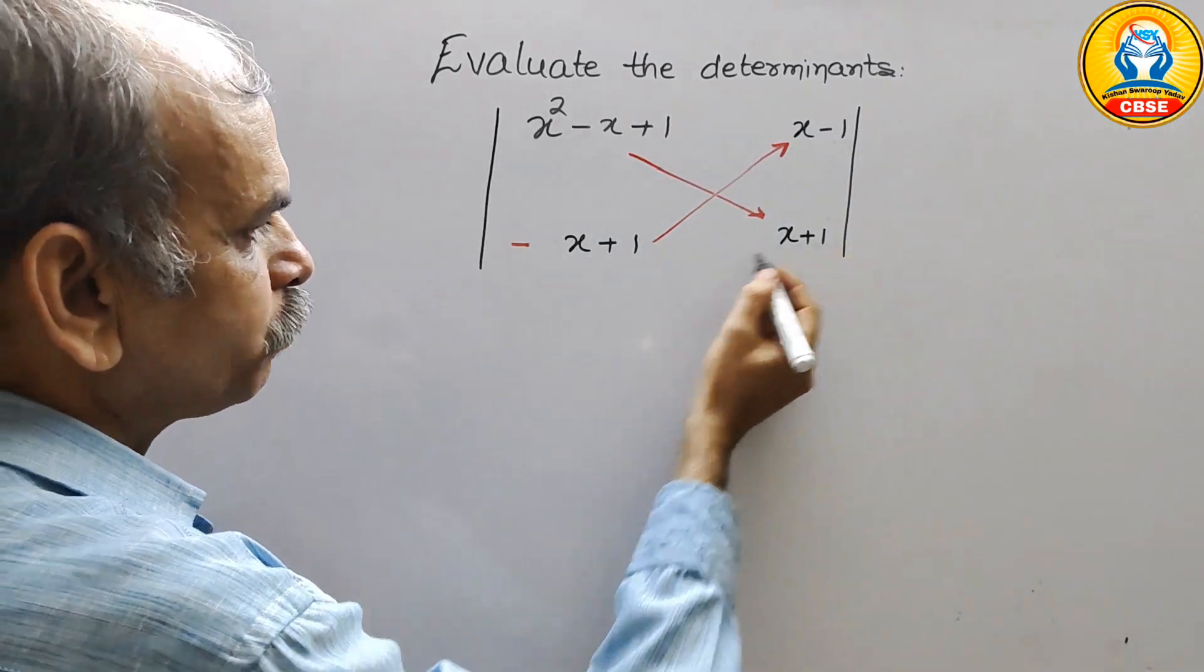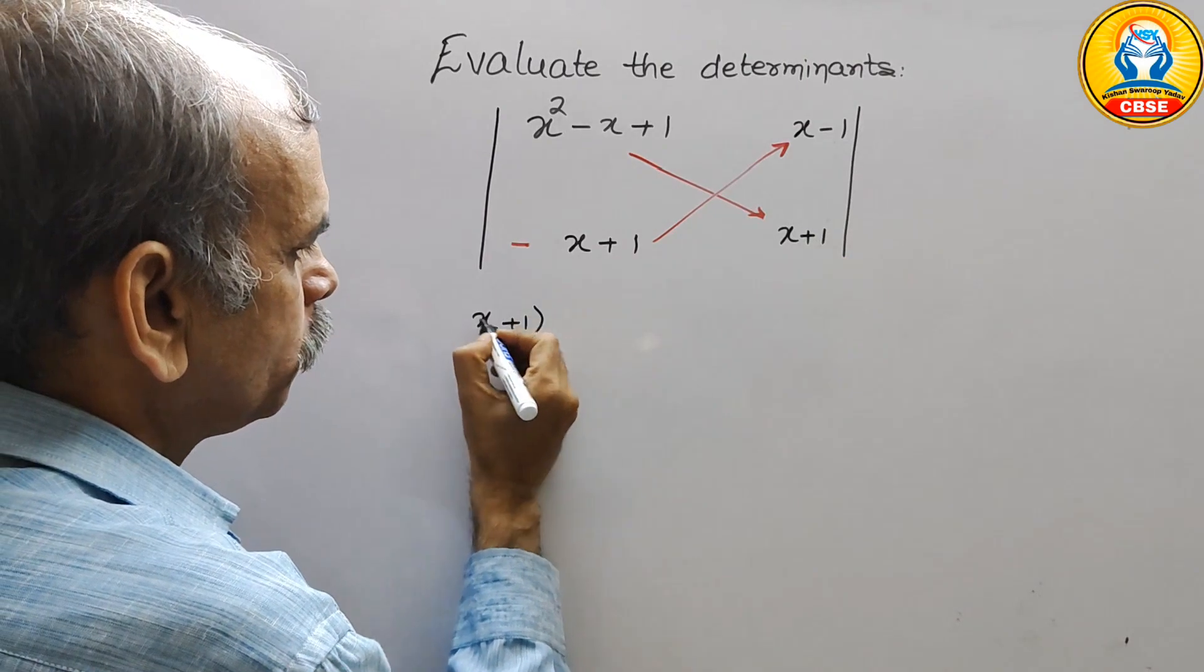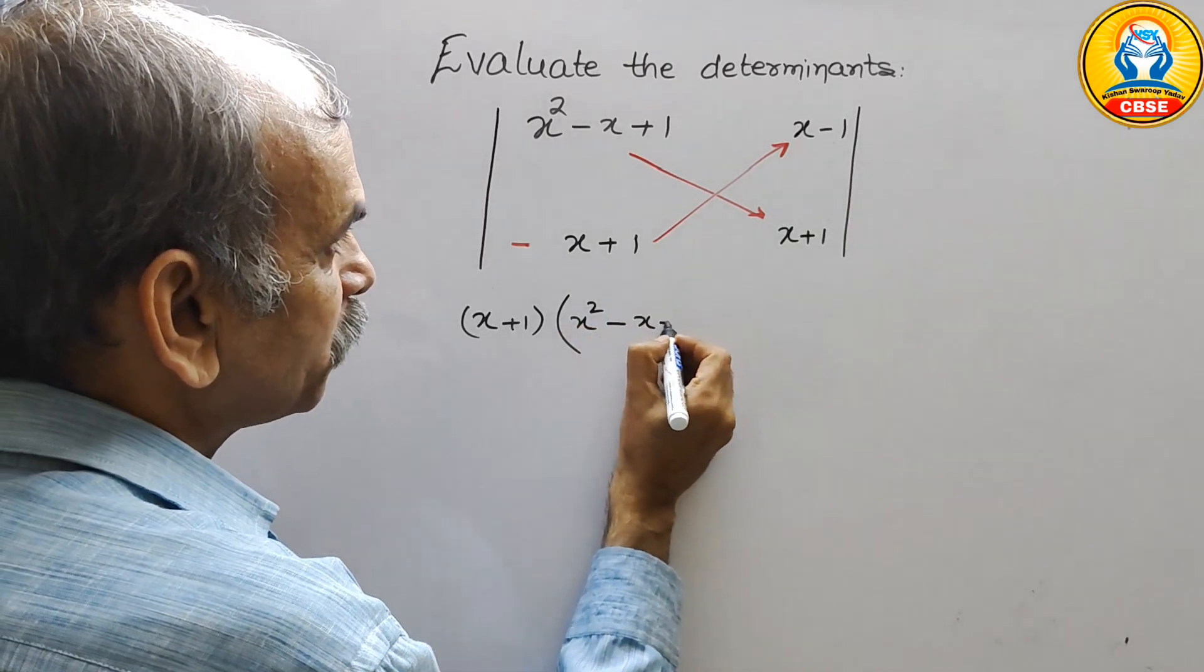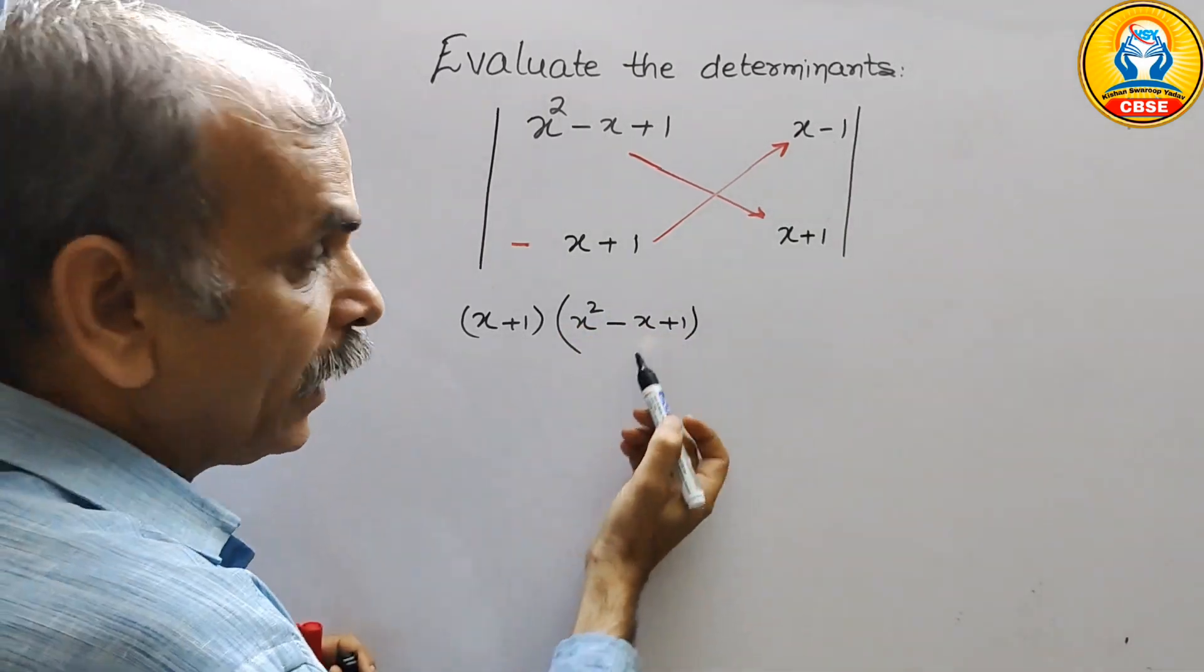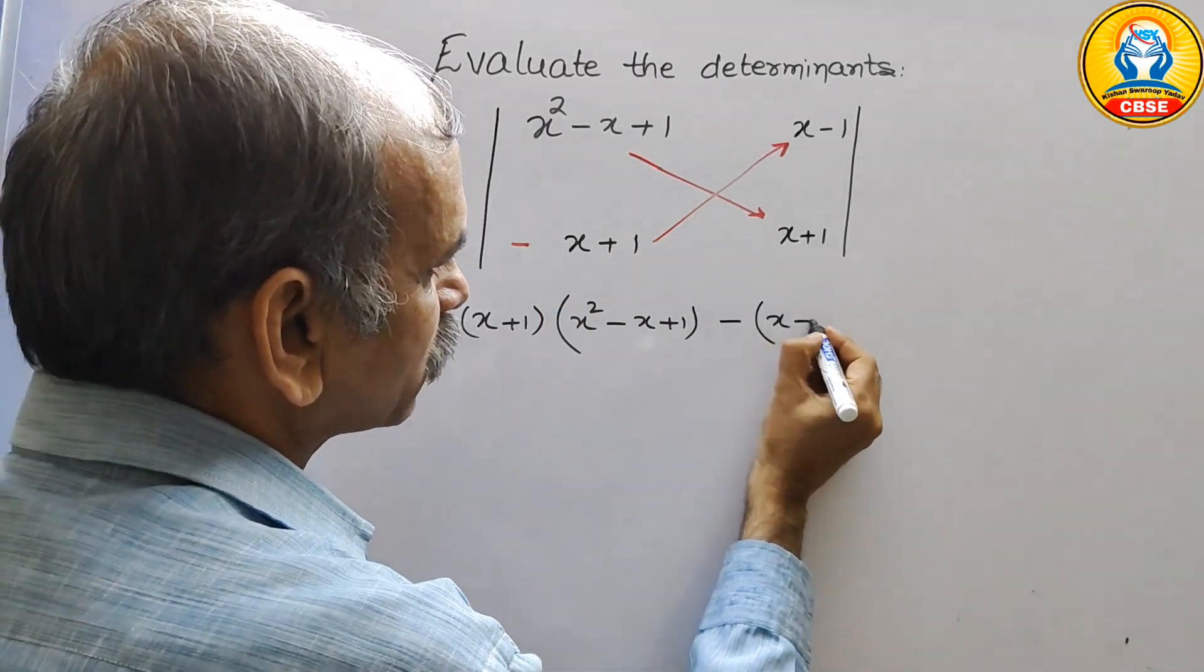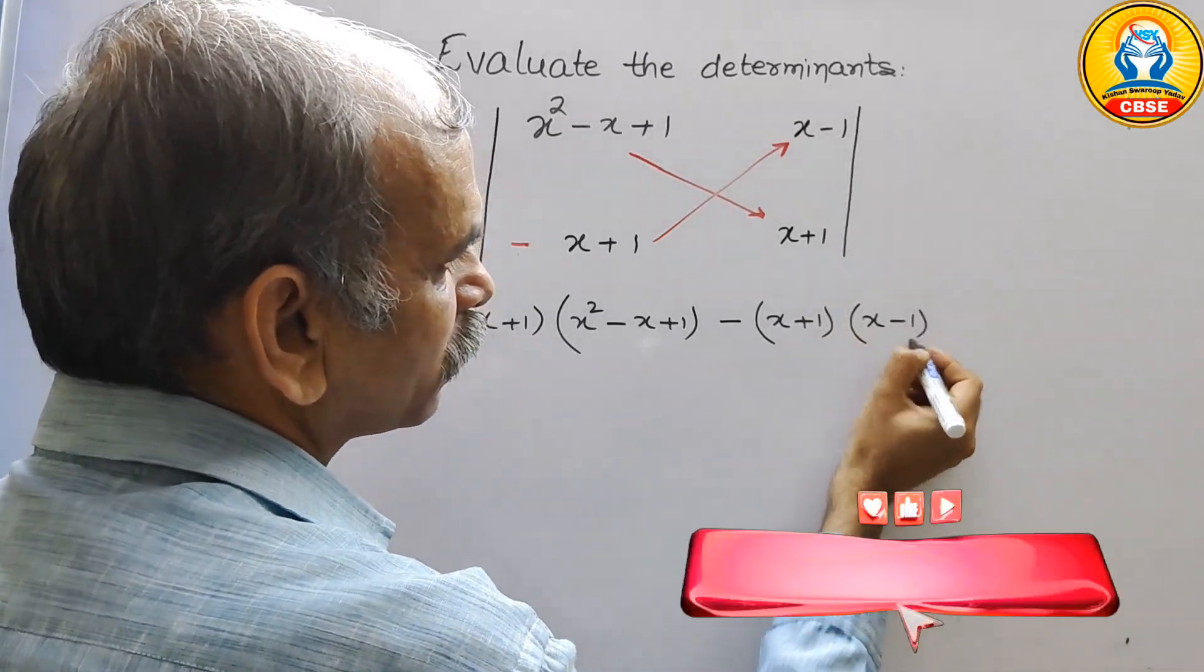So we can write it as x plus 1 into x square minus x plus 1. And minus sign here, here we will put x plus 1,